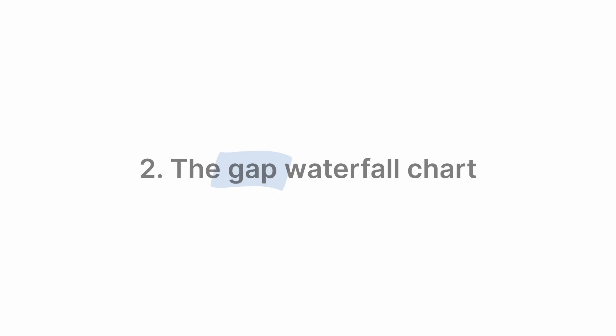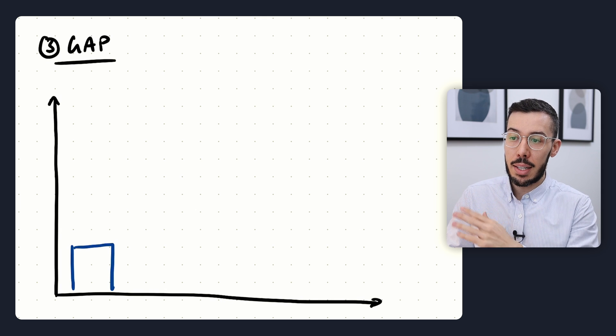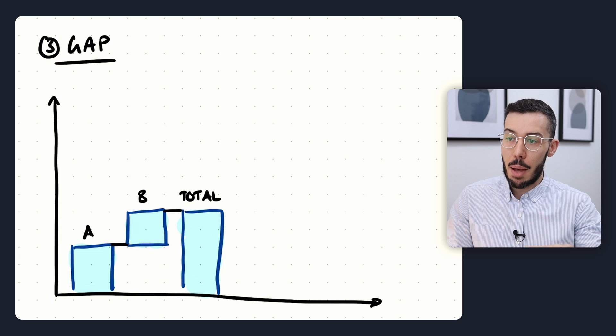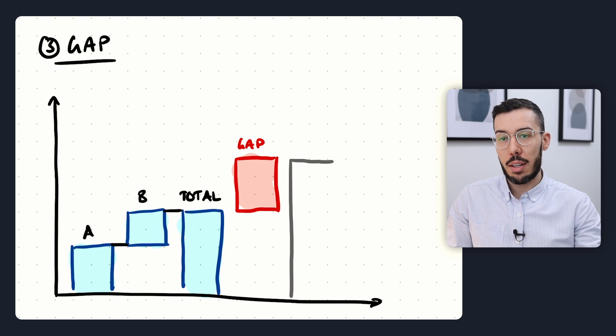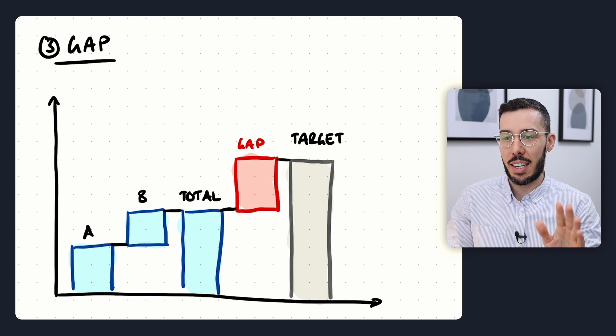This next waterfall chart is a little rarer but really cool — it's called the gap waterfall chart. You create a standard waterfall chart that builds up to a total, then show a gap, then show a target, highlighting the difference between where you are and where you need to be. A handy tip: choose a different color or border style for the gap column so it really draws the eye.